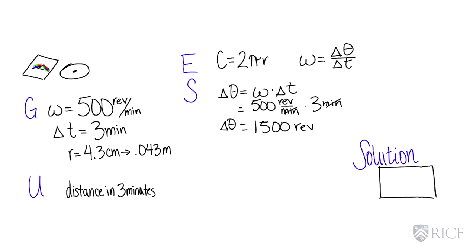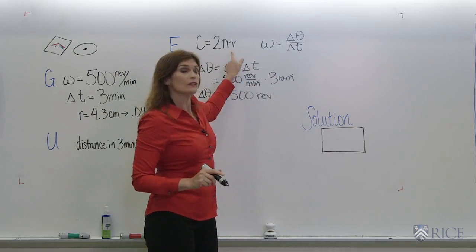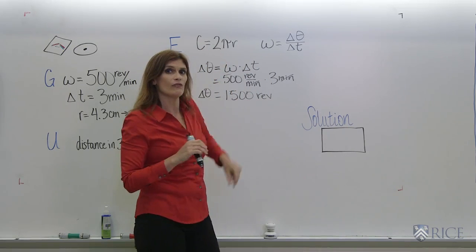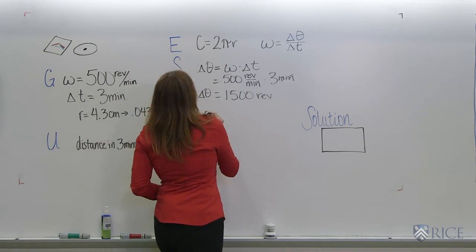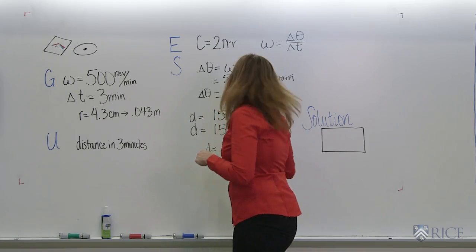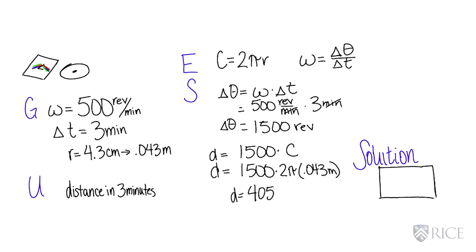So one revolution is one circumference. So now we're going to use the second equation, and we're going to plug in that we're going 1,500 circumferences, and that will tell us how far our piece of dust has traveled. Plug that into your calculator, and you get that it's about 405 meters.